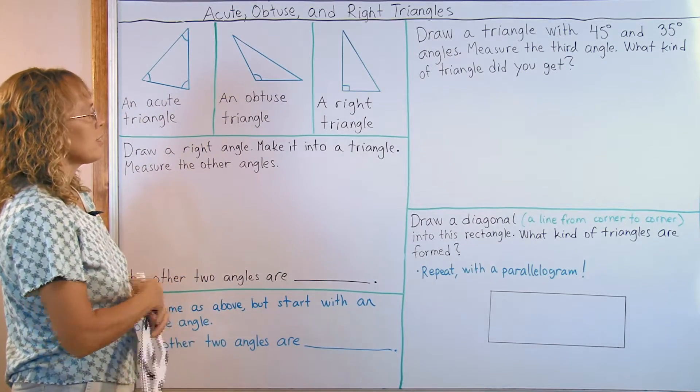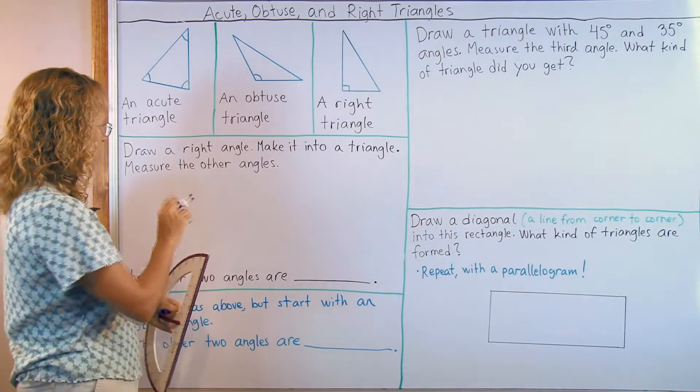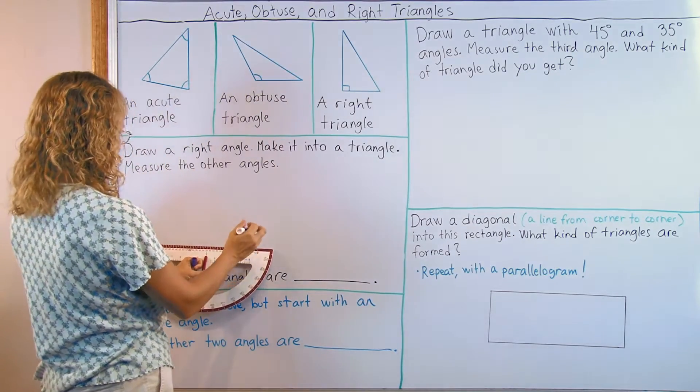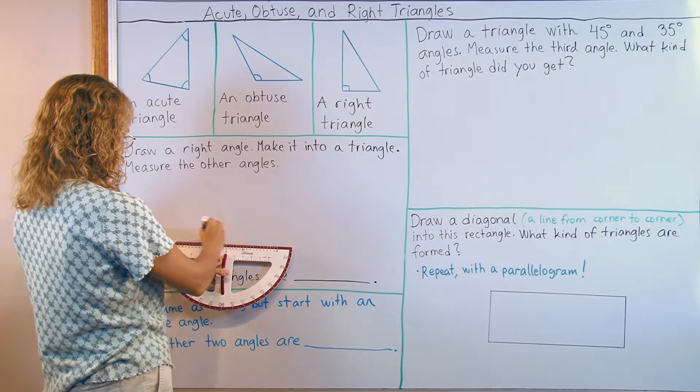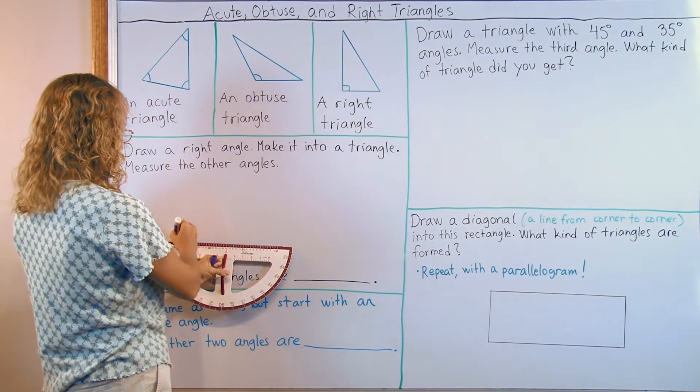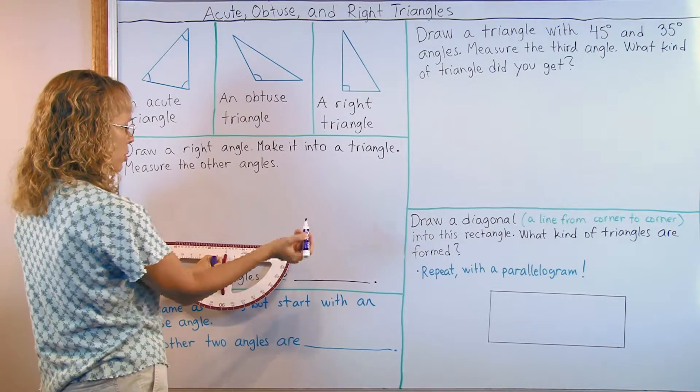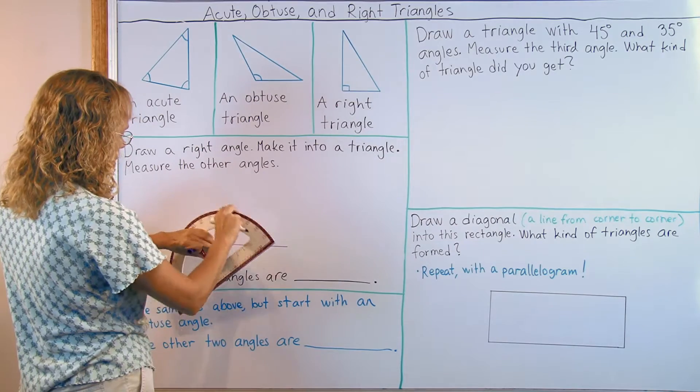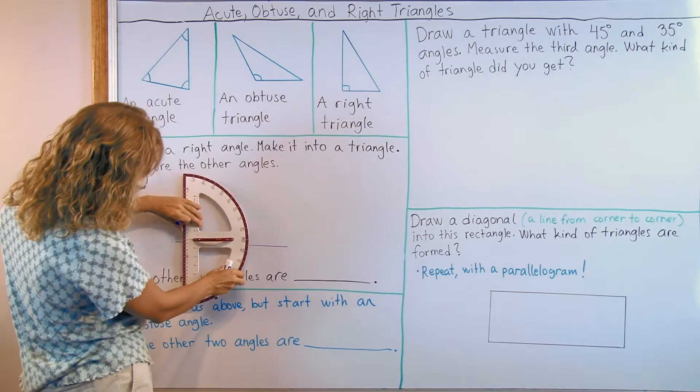So let's draw a right triangle by first starting with a right angle. I will draw a right angle. The side lengths can be any so it doesn't matter how long you draw the lines. Here's one side and then I need to draw a right angle.